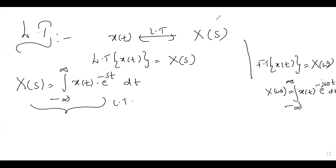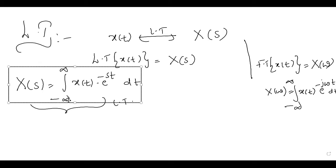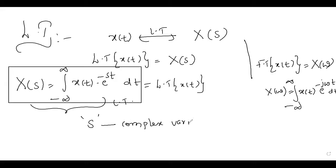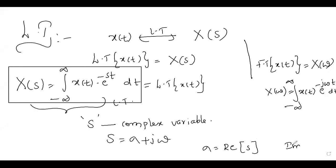Write the Laplace Transform formula: X(S) equals the integral from minus infinity to infinity of X(t) into e^(−St) dt. This is the formula for the Laplace Transform of X(t). Note that S is a complex variable, where S is written as σ + jω. Here, σ is the real part of S, and ω is the imaginary part of S.